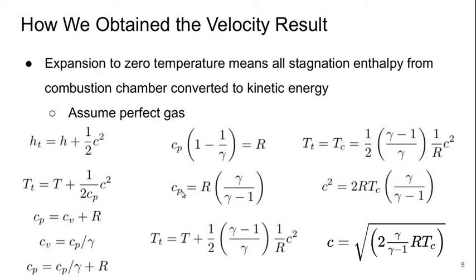Grouping the terms, we can get an expression for Cp in terms of R and gamma. And if we substitute that into our definition of stagnation temperature equation, we get this.